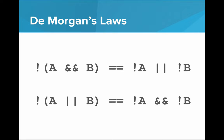Similarly, we can distribute the NOT through the OR: NOT A gives NOT A, negate the OR to get AND, and negate B to get NOT B. And so these are DeMorgan's Laws. These can help you when you're trying to simplify a Boolean expression or figure out how to express some sort of logical statement.